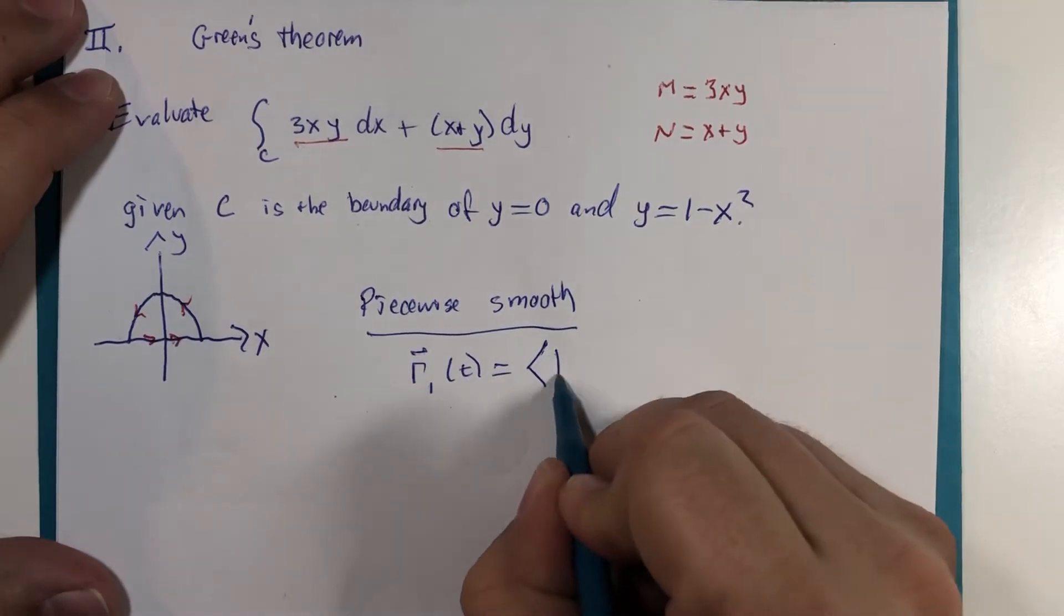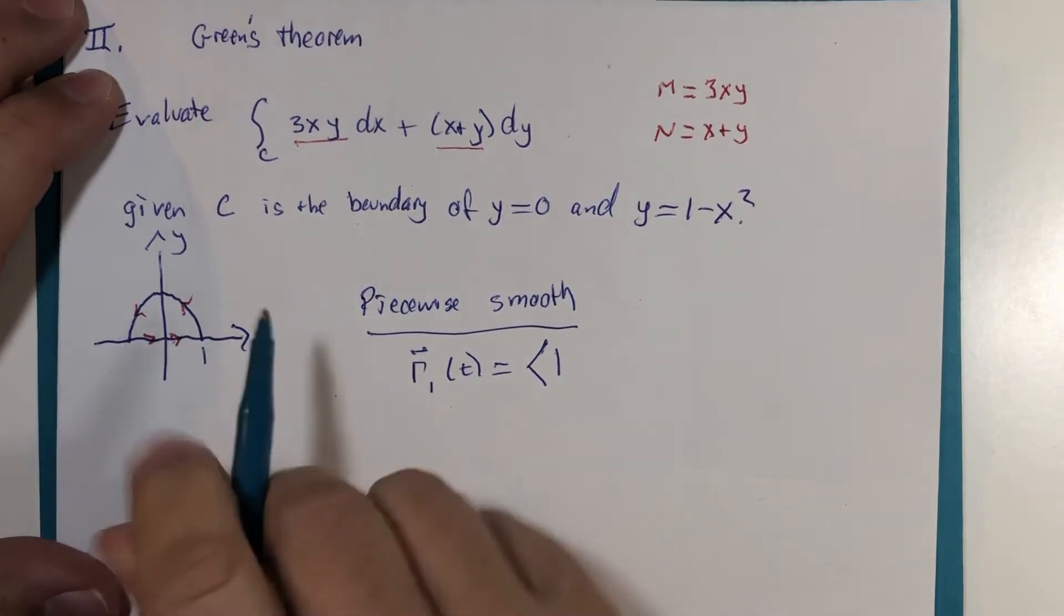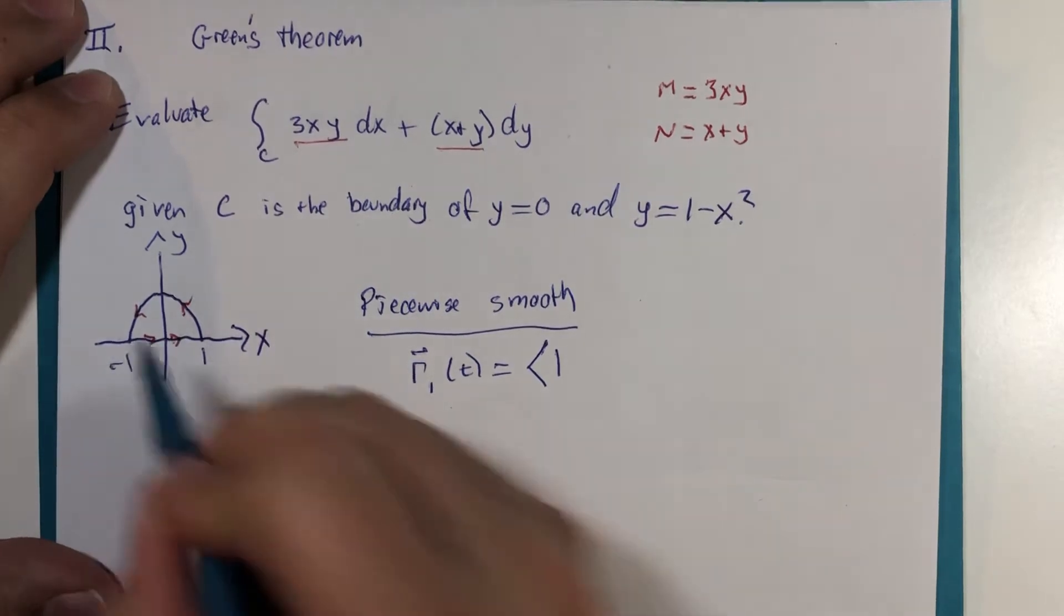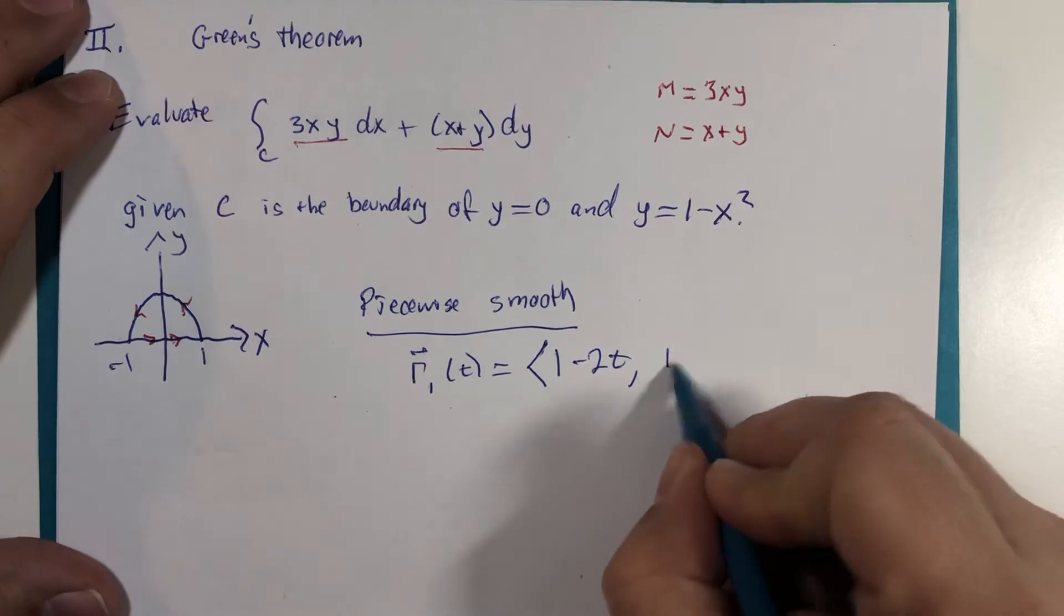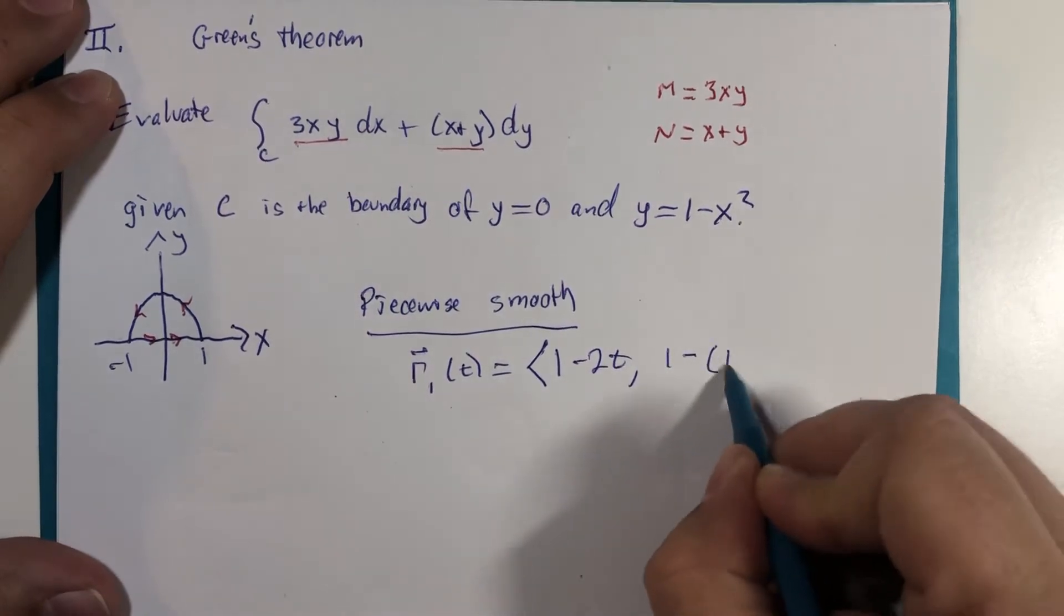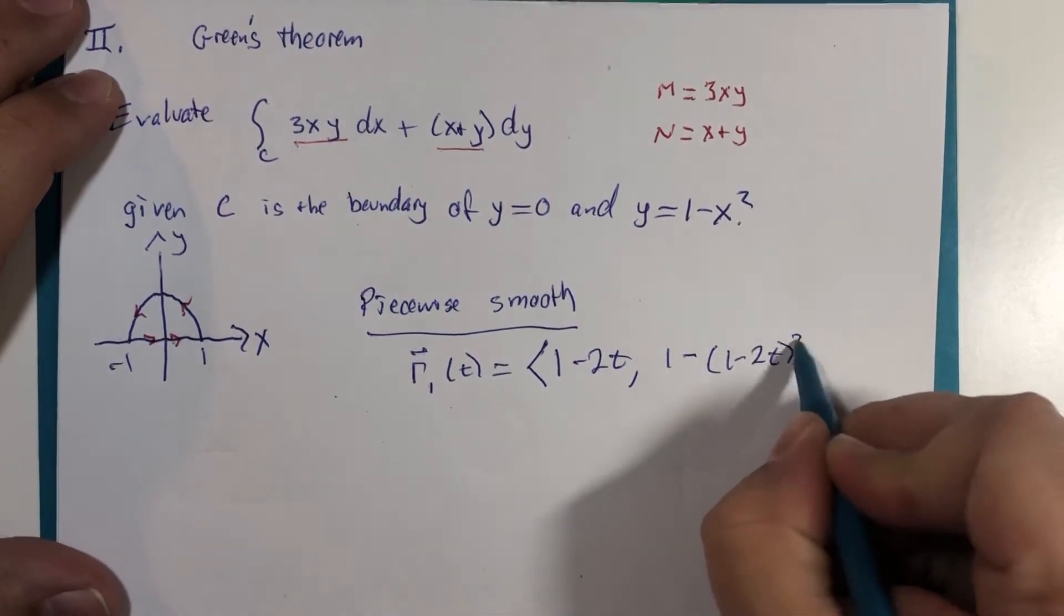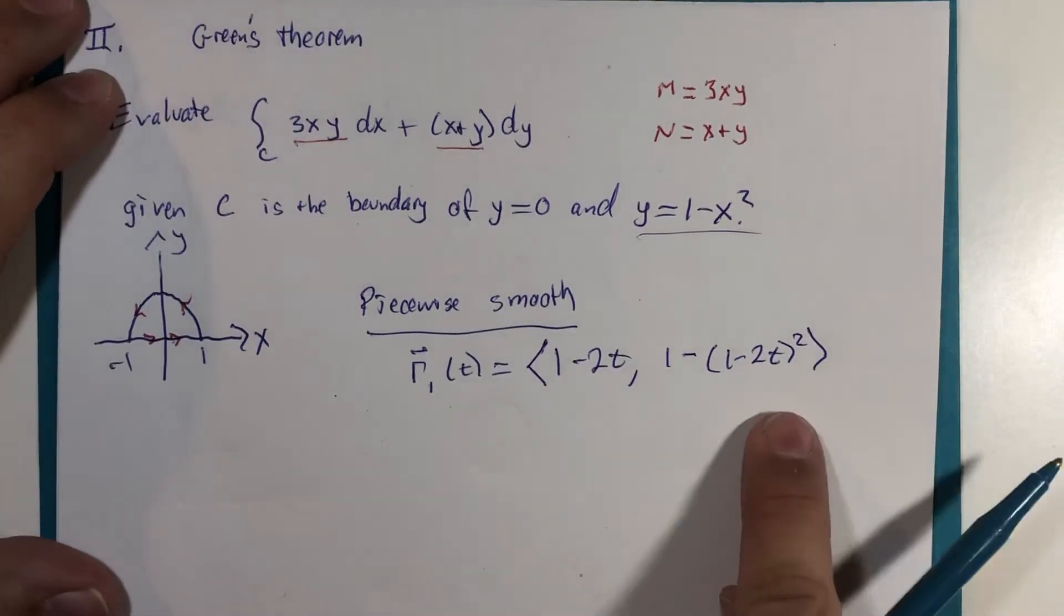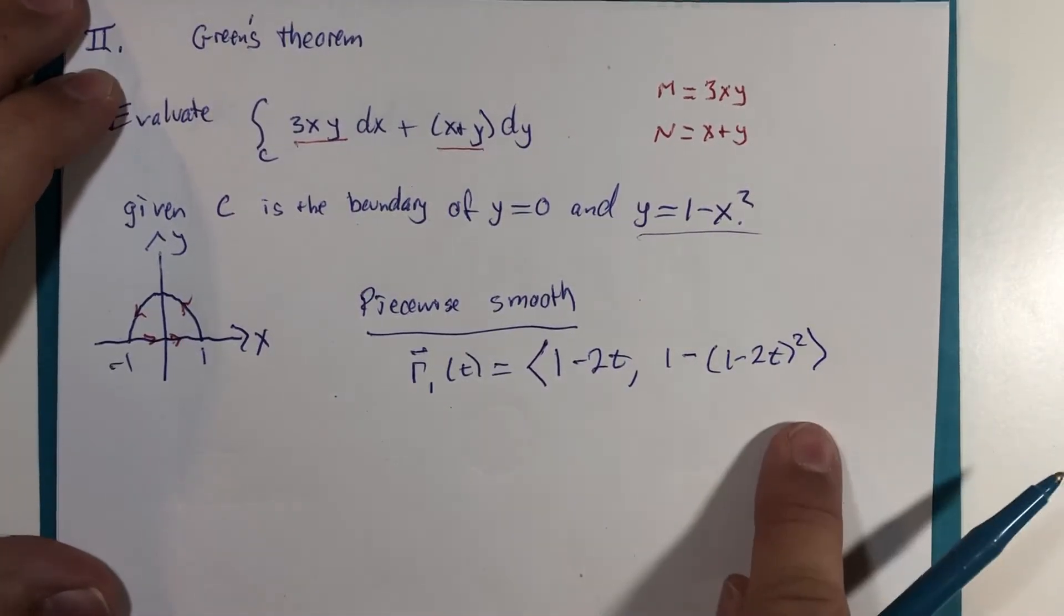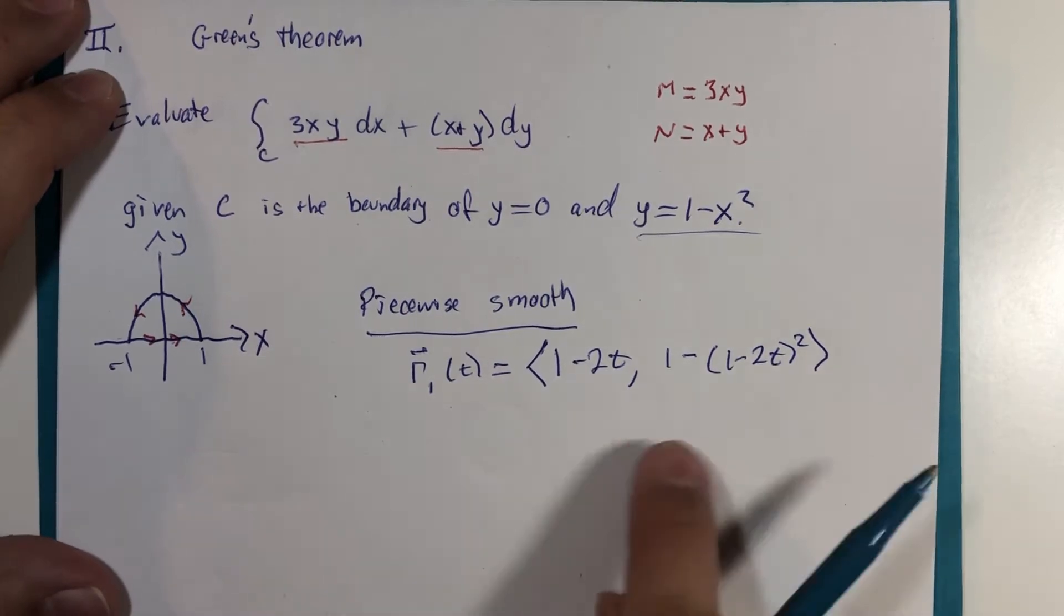And we could even do that without too much work. If I start at 1 and go backwards 2 units, that would be x. And then the y value is 1 minus whatever the x value is squared. That's what this function says.